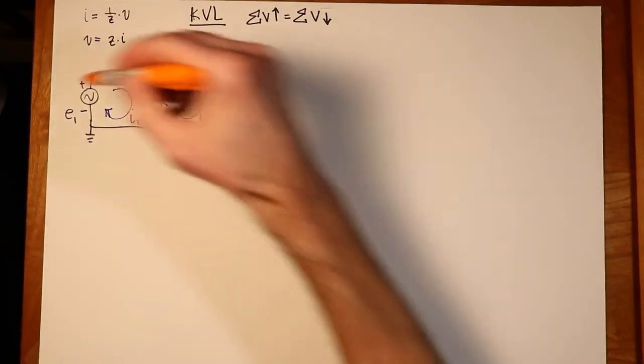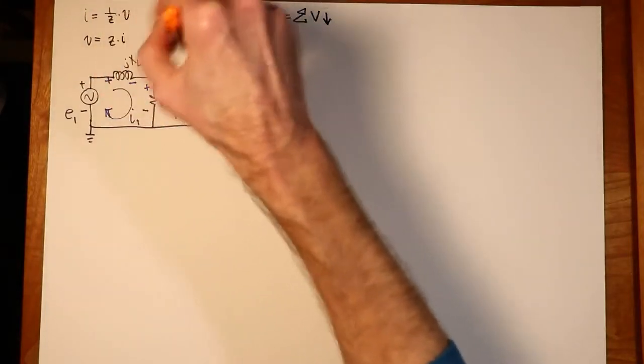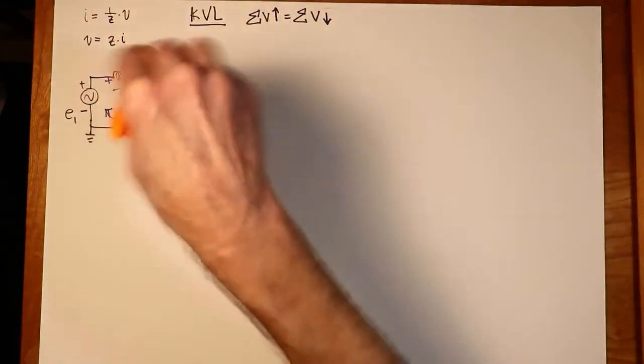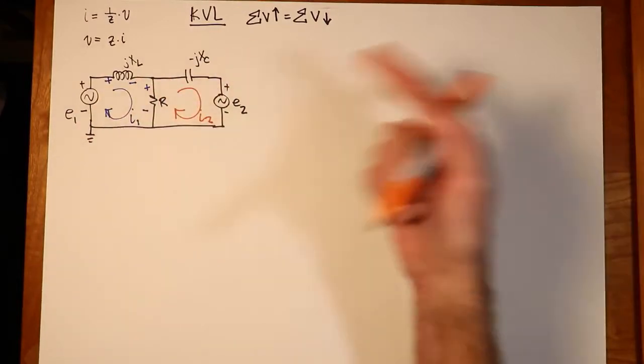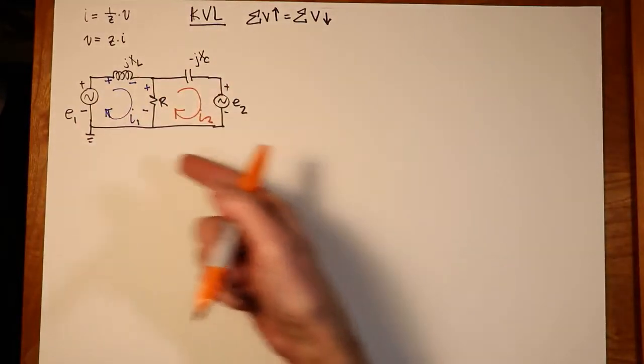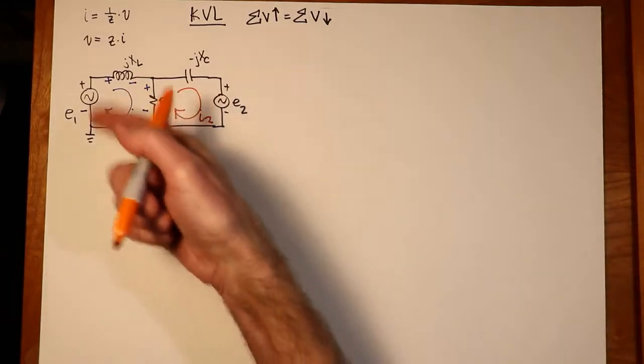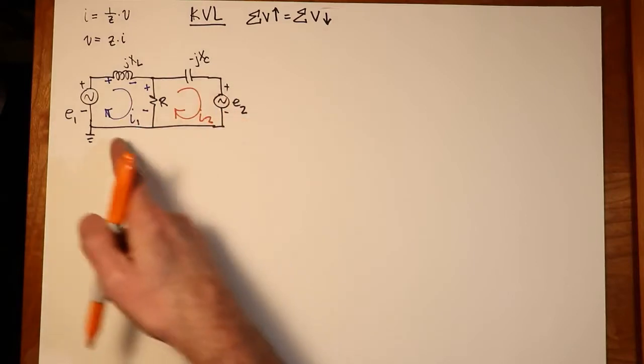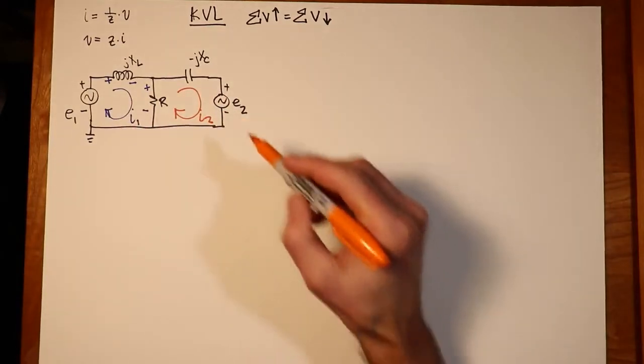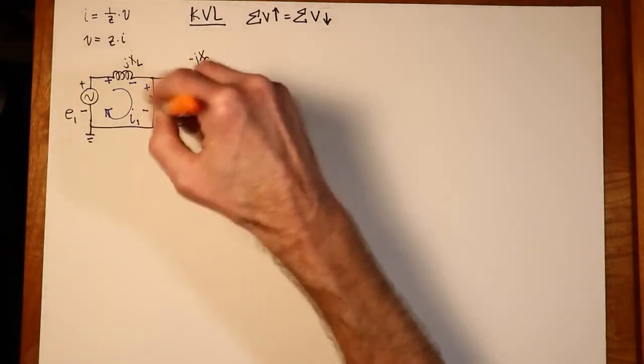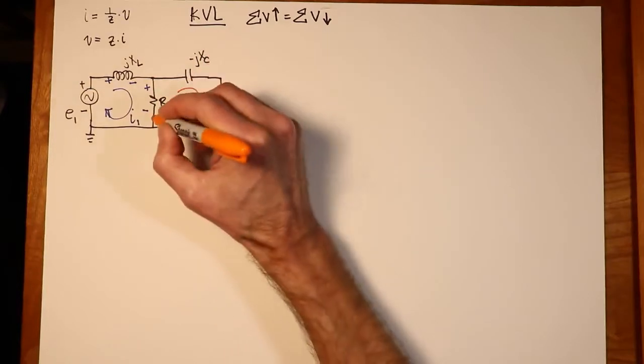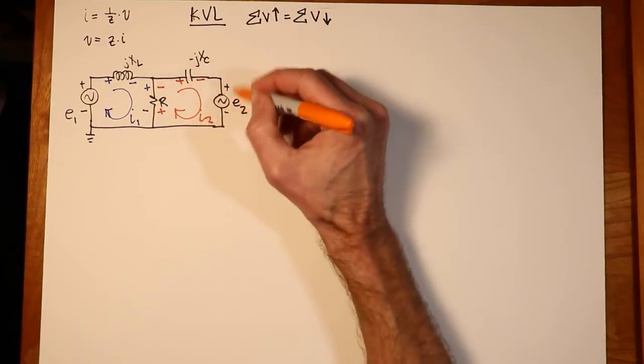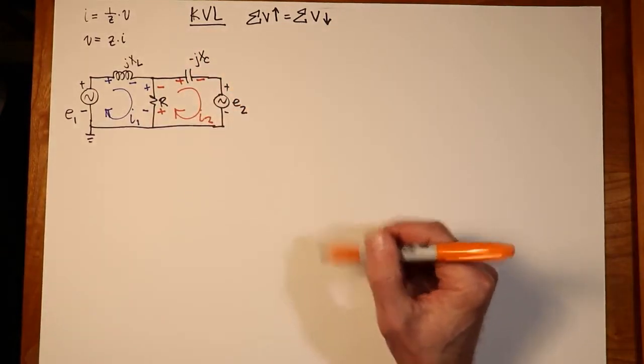So the next loop we would create would look like this, I2. If I had a bigger circuit, maybe I had something come up over here, I'd have a third loop. These are roughly analogous to the nodes that we would have in nodal analysis. Just as in nodal analysis, the number of nodes tells you how many equations you have, the number of loops you have in a mesh analysis tells you the same thing. Continuing along with I2, given this clockwise orientation, we would have this sort of polarity across R, this polarity across the capacitor, and of course we already have a defined reference polarity on our source E2.